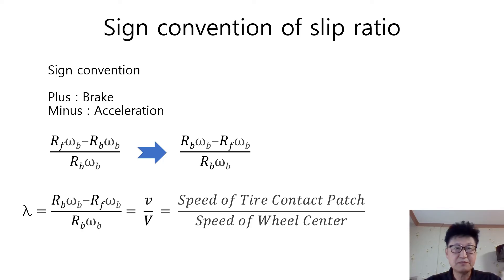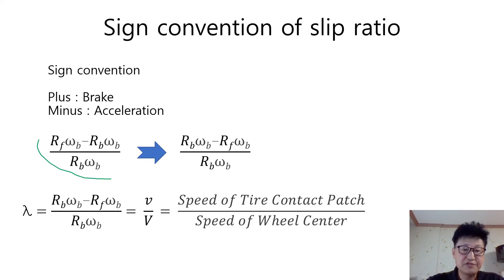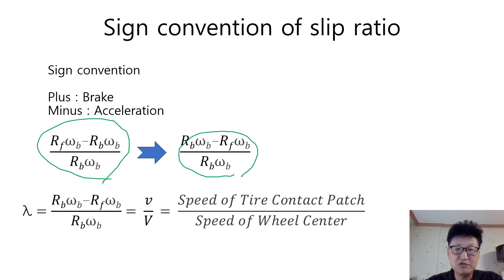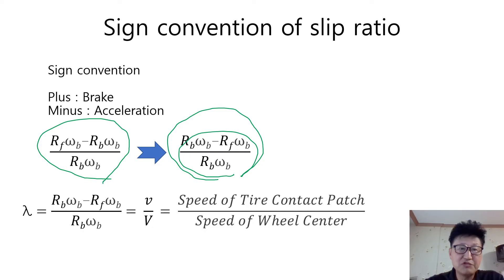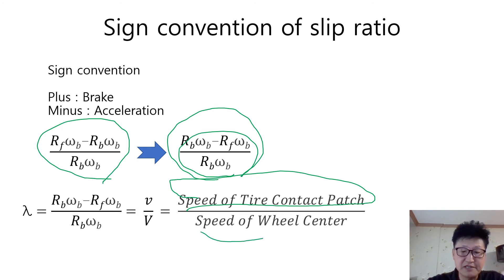In this presentation, the slip ratio has a plus value in braking and a minus value in acceleration, because a minus sign is not convenient for explaining braking. Many textbooks use a different expression, but I changed the equation so that the brake slip ratio has a plus value. A longitudinal slip ratio is simply the ratio of the speed of the tire contact patch to the speed of the wheel center — you have to remember this.